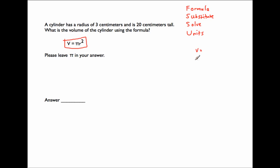Variables are just the letters: V equals, pi equals, r equals. Let's read the problem. A cylinder has a radius of 3 centimeters, so r is 3. It is 20 centimeters tall. Actually, we forgot one thing — the full formula is V equals pi r squared times h, where h stands for height. So h equals 20. We want to find the volume, so V gets a question mark. Pi will remain as pi in our answer.